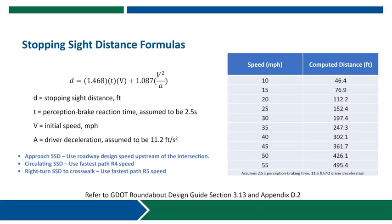The table shows computed distances for a variety of speeds. At around 15 miles per hour, which would better reflect the speed around the circulatory roadway, you have a computed stopping sight distance of only about 77 feet. However, at a higher speed — say 55 miles per hour reflecting a higher-speed roadway approaching an intersection — you would need a stopping sight distance closer to 500 feet upstream of the crosswalk or yield line for a vehicle to be able to see and react to those elements of the roundabout.